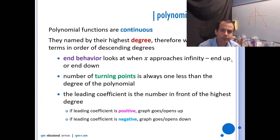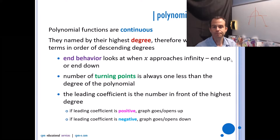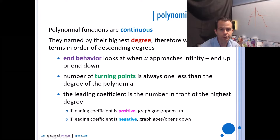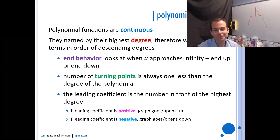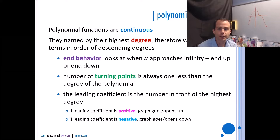The leading coefficient is the number in front of the highest degree, and that tells us the end behavior. If the leading coefficient is positive, the graph will open up or end up. If the leading coefficient is negative, the graph will go down or open down.